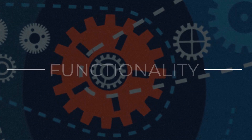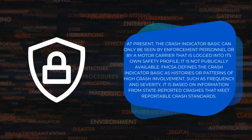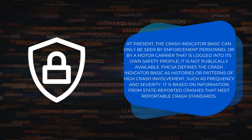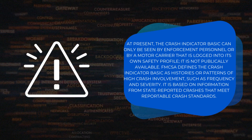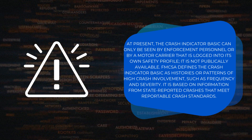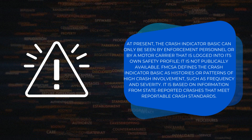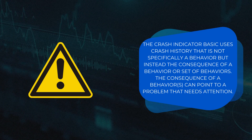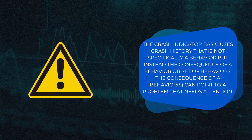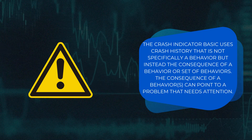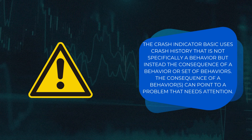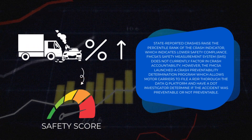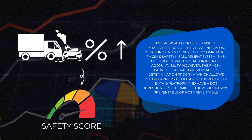At present, the Crash Indicator BASIC can only be seen by enforcement personnel or by a motor carrier that is logged into its own safety profile — it is not publicly available. The FMCSA defines the Crash Indicator BASIC as histories or patterns of high crash involvement, such as frequency and severity. It is based on information from state-reported crashes that meet reportable crash standards. The Crash Indicator BASIC uses crash history that is not specifically a behavior, but instead the consequence of a behavior or set of behaviors — a consequence that can point to a problem that needs attention.